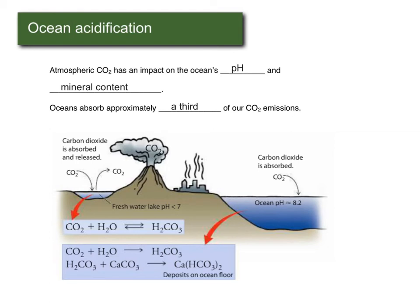As more CO2 is absorbed into the water, the pH goes down because it becomes more acidic. It also reacts with carbonate already in the water — the same kind found in limestone — which helps reduce the pH impact, but results in calcium carbonate deposits on the ocean floor. That means the carbonate is no longer available to marine life that needs it to form shells. So the impact is twofold: it changes the pH and the availability of minerals many marine organisms need to survive.